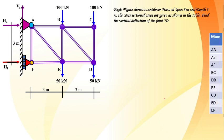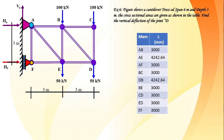The member lengths are already given in the problem, so we do not need to calculate them. Horizontal members are all 3 meters, vertical members are all 3 meters, and the inclined member is 4.242 meters. These values are given in millimeters but we consider them in meters for the analysis.